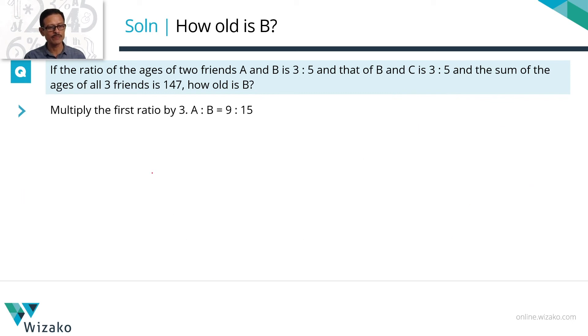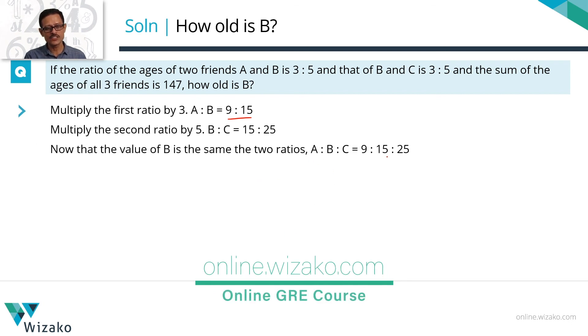LCM of these two values is 15. So we are rewriting the first ratio as 9 is to 15. We are rewriting the second ratio as 15 is to 25. So now we can combine the two ratios and write it as a single ratio A is to B is to C as 9 is to 15 is to 25.